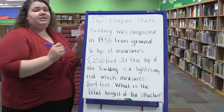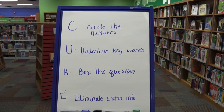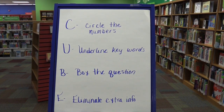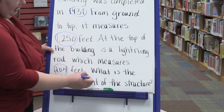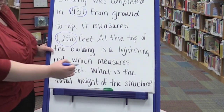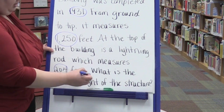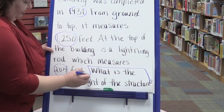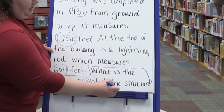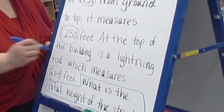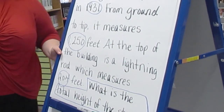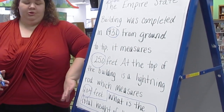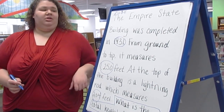Then I'm going to skip the U step and go to the B step. B says box the question. Usually the questions are at the very end, and I come down here and find 'What is the total height of the structure?' and I draw a box around that. As kids get older you may see an imperative statement such as 'write an equation' or just the word 'solve,' but as kids start learning CUBE it will almost always be a question at the end.